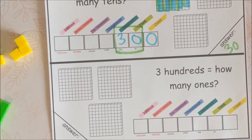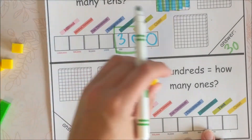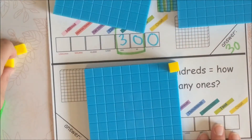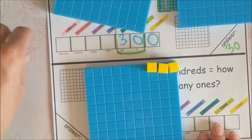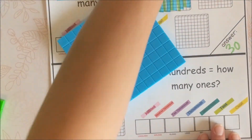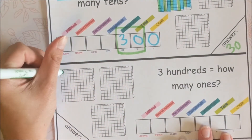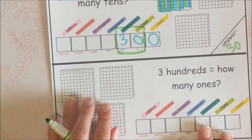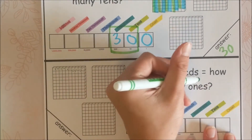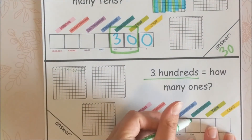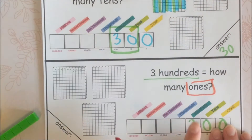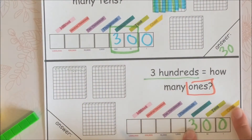Three hundreds is how many ones? We still have 300, but now we're asking how many individual ones would it take to fill up one, two, three hundreds. I could fill up a whole flat with ones but I'm not going to do that. Let's use the place value chart: put 300 into it. It's asking for ones this time, so start at the three, go all the way down to the ones, and circle. Three hundreds is 300 ones.